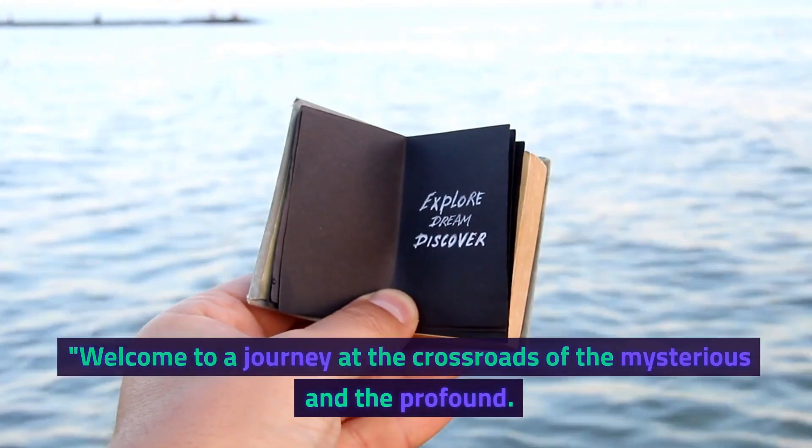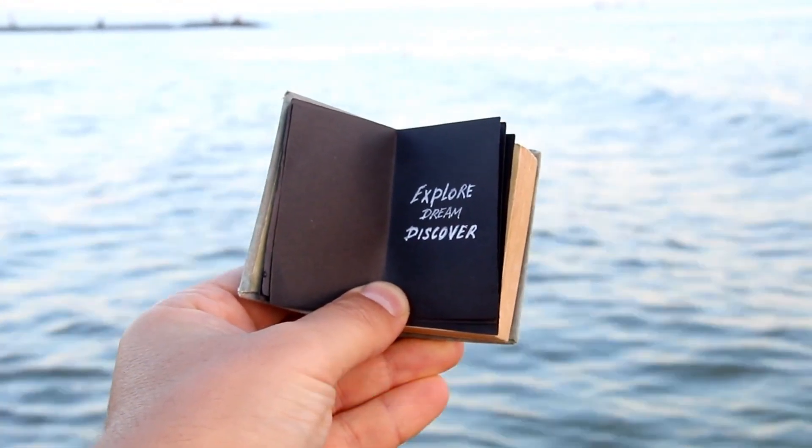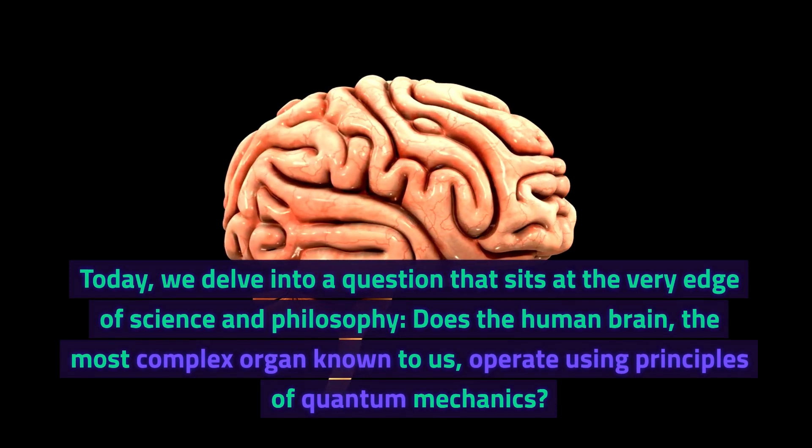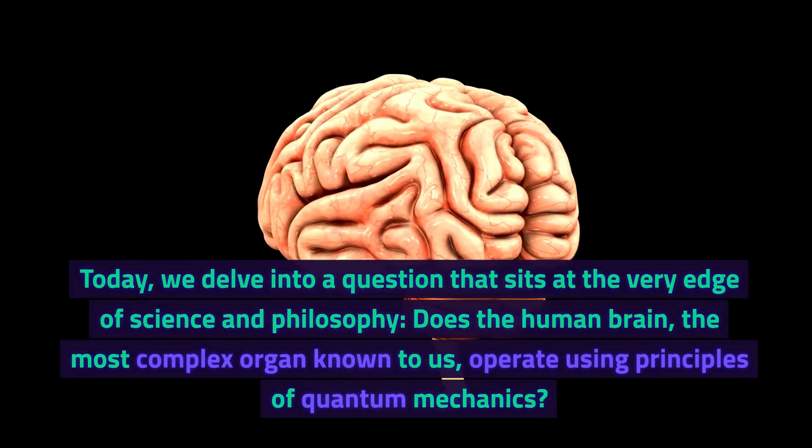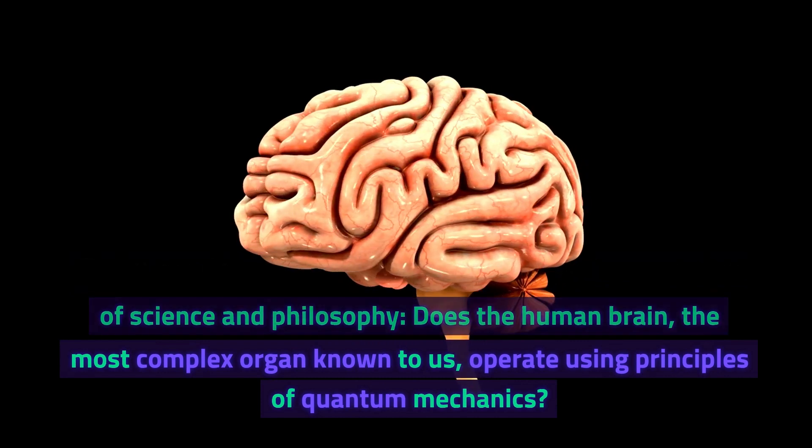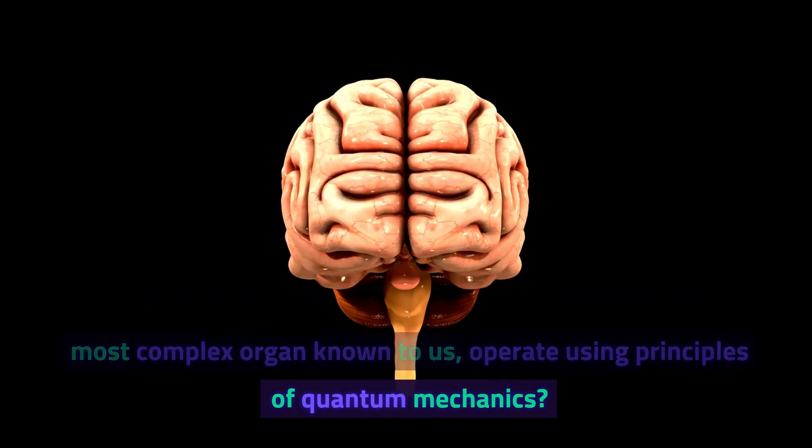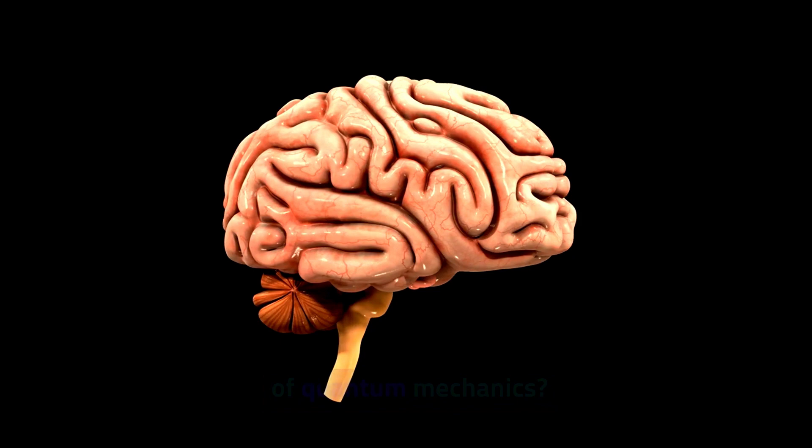Welcome to a journey at the crossroads of the mysterious and the profound. Today, we delve into a question that sits at the very edge of science and philosophy. Does the human brain, the most complex organ known to us, operate using principles of quantum mechanics?